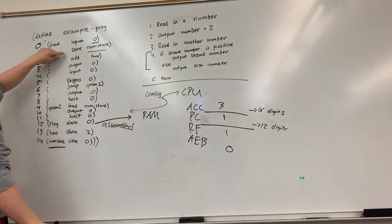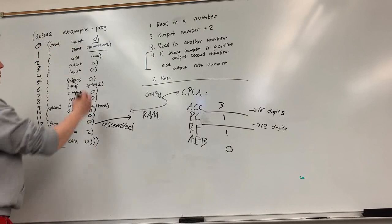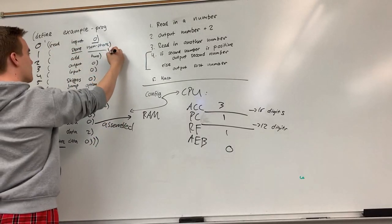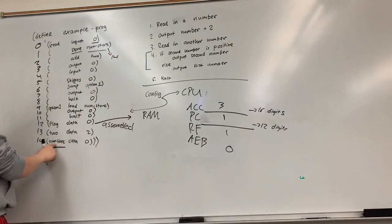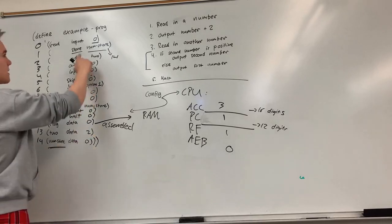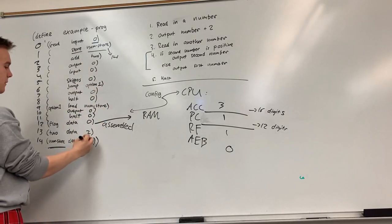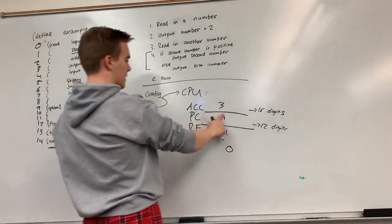That will make our accumulator three and our program counter will move up one to one. Now we're at instruction one we're going to store in numstore. So store is an instruction that takes an address. Here numstore will eventually be turned to basically 14 because I have numstore down here as a label for this instruction. It'll take my three and it'll put it down here so that this becomes a three.